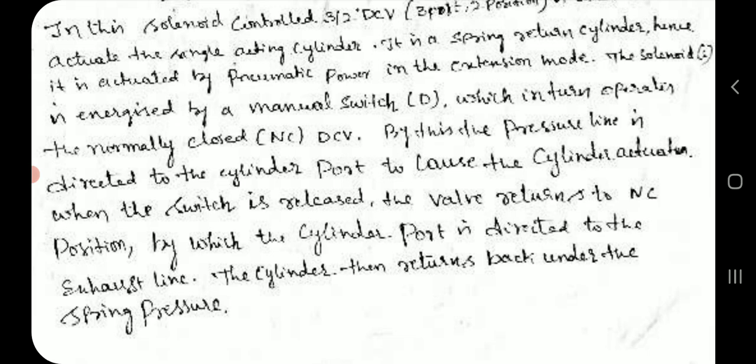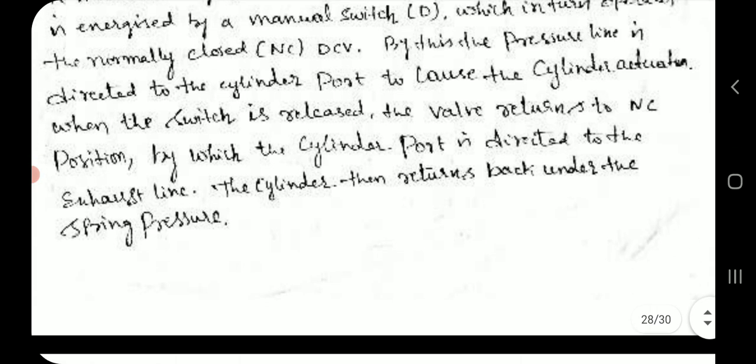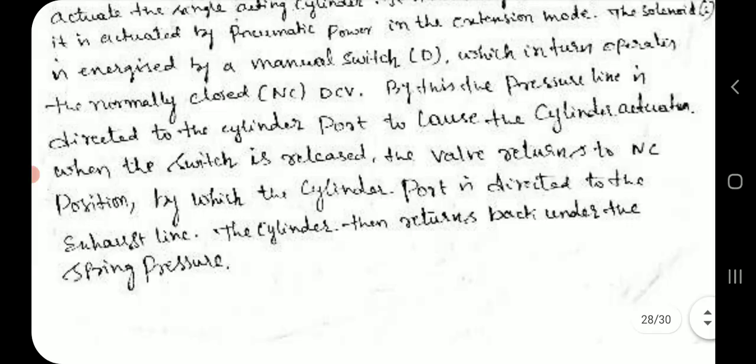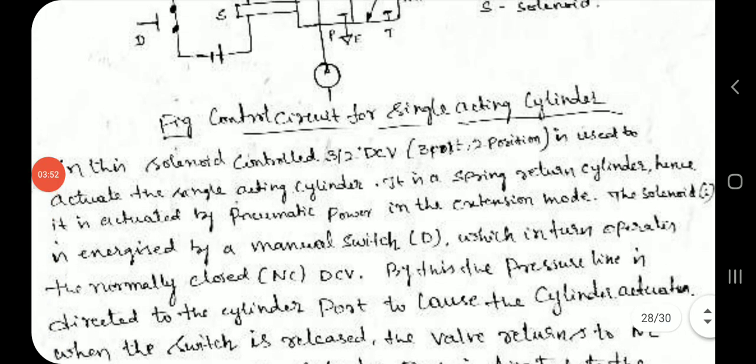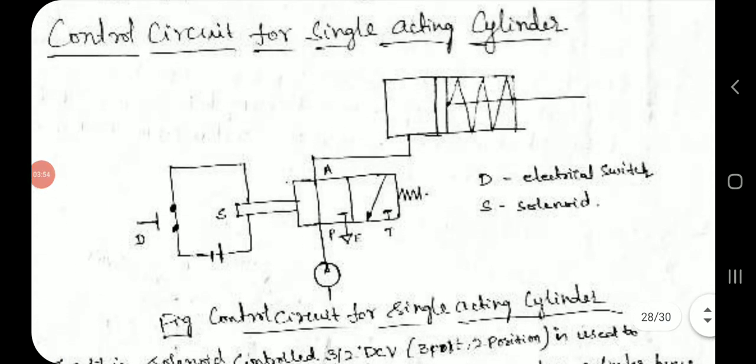When the switch is released, the valve returns to the normally closed position, by which the cylinder port is directed to the exhaust line. The cylinder then returns back under the spring pressure. This is the diagram of the control circuit for a single-acting cylinder, showing the electric switch S and solenoid.